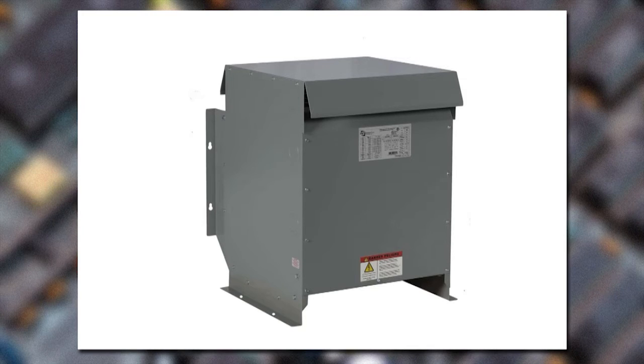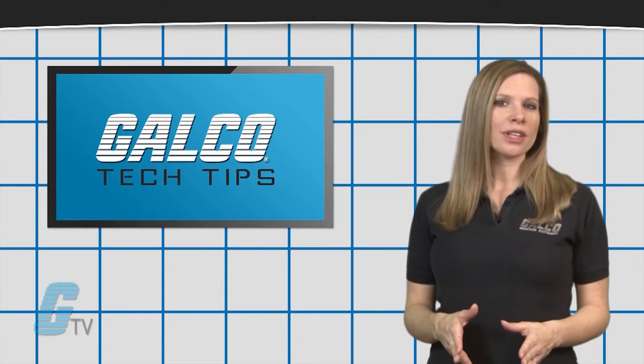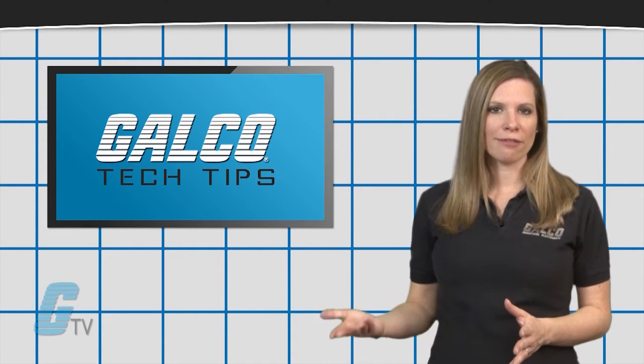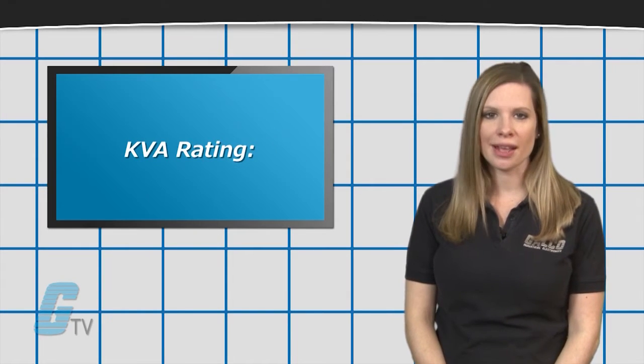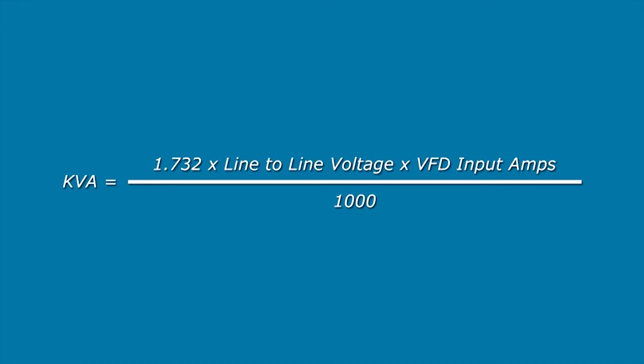from other sensitive electronic equipment. If your electrical system requires a drive transformer, you will need to calculate the KVA rating. This is done by multiplying the line to line voltage with the VFD input amps and 1.732. Then divide this number by 1000.